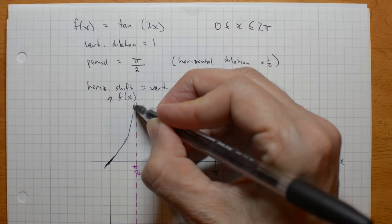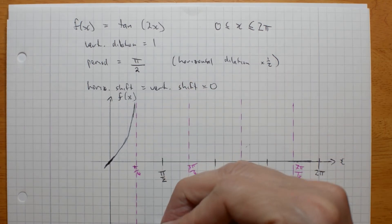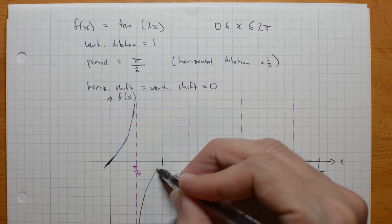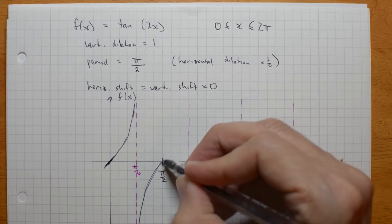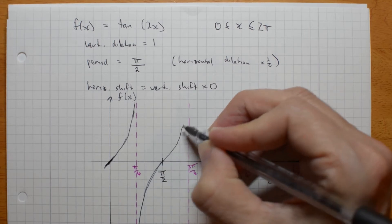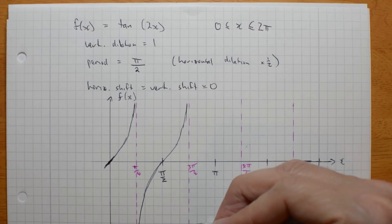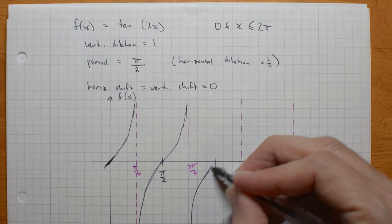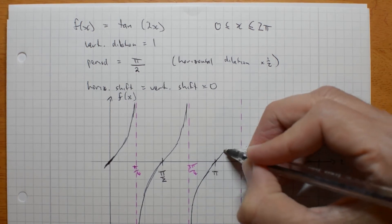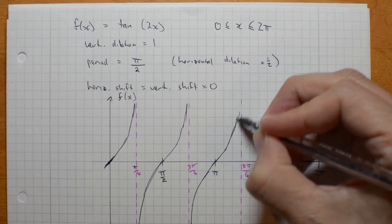And then it's going to go up towards there. It's going to come up from the bottom, through it pi on 2, and then go back up towards the asymptote. And again, it's going to come up here, through pi, and back up to this one.